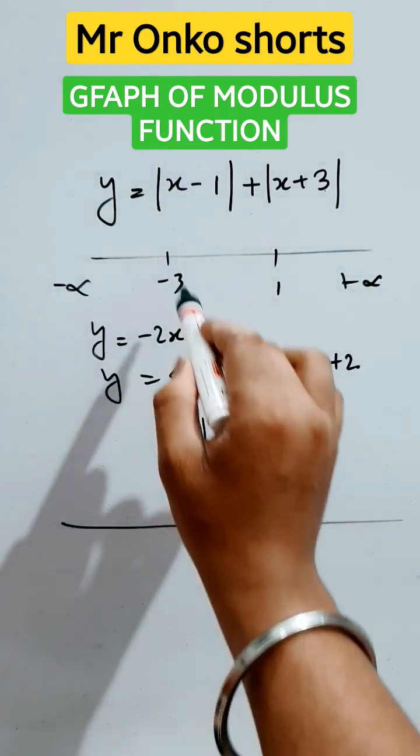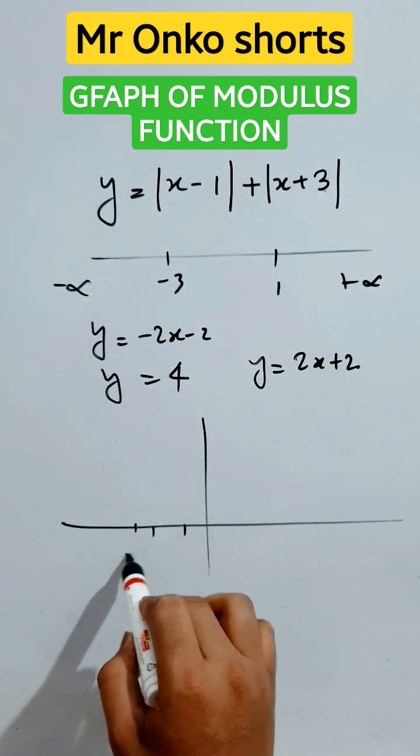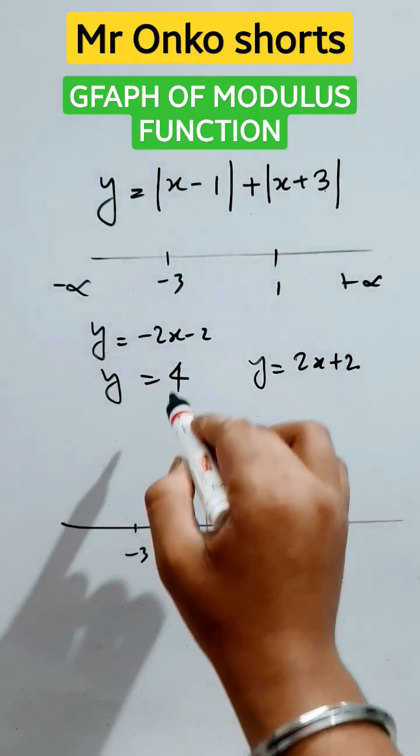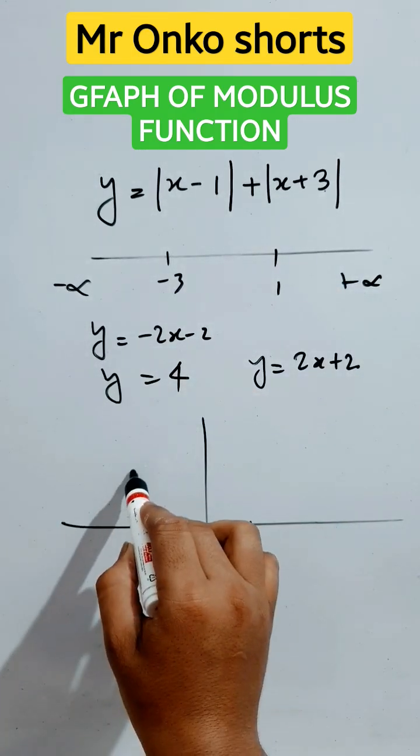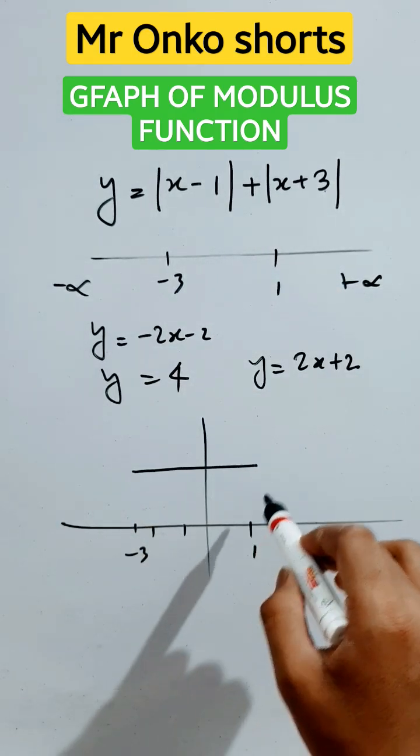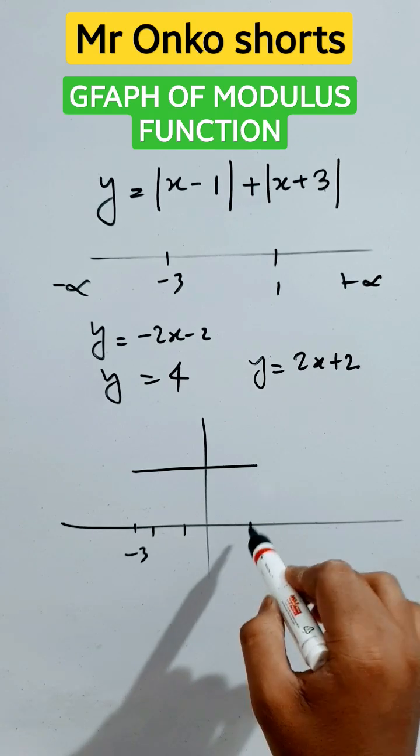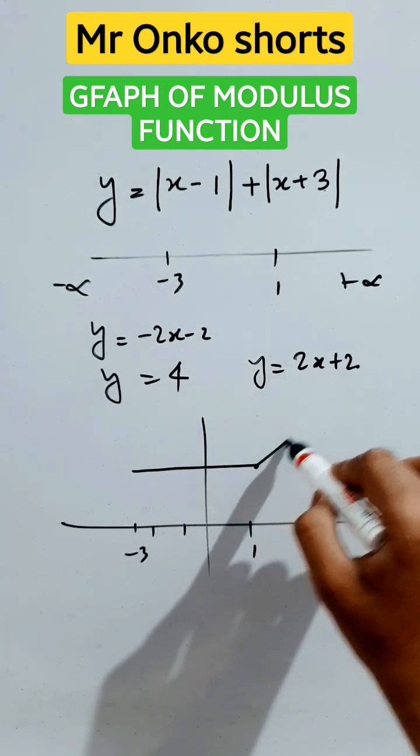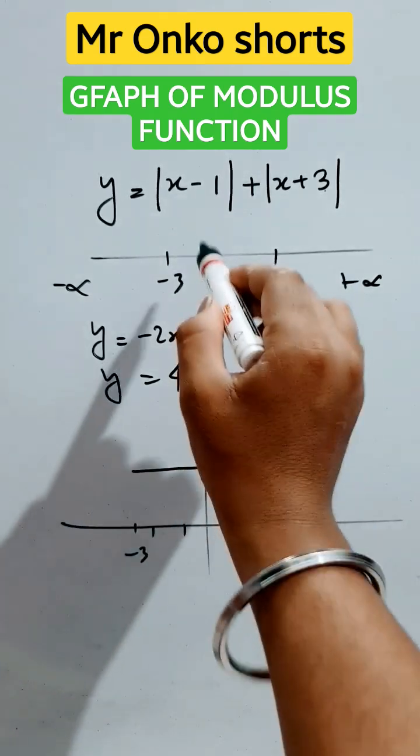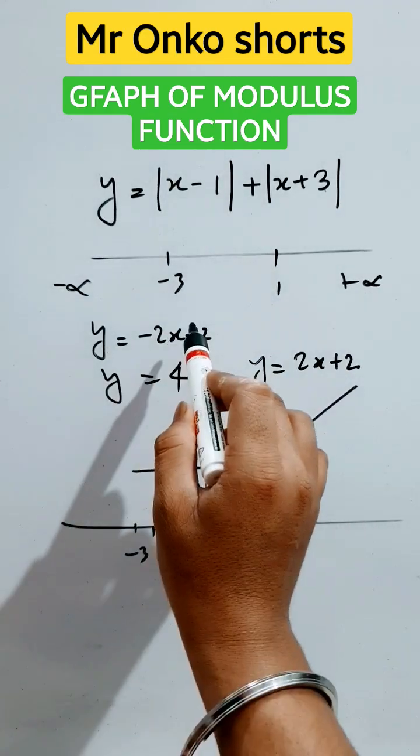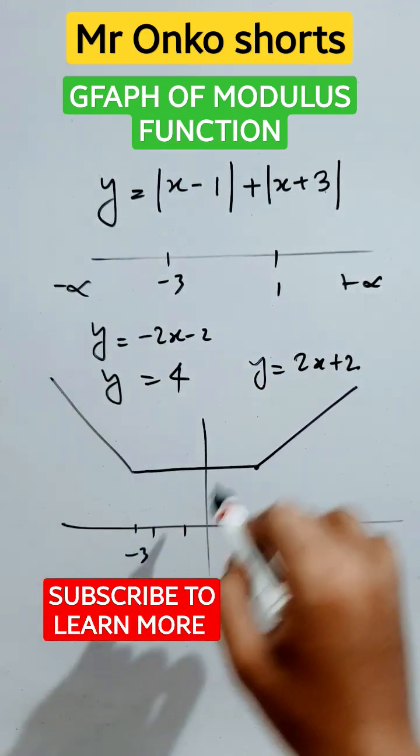So the graph will be minus 3 to 1. So 1, 2, 3, it's minus 3, 2, 1. Between this, it is 4. So it will be a straight line, parallel to x-axis. And after 1, there is greater than 1, it will be 2x plus 2. Straight line will be there. And here, it is minus 2 minus 2x. This is going to draw the graph.